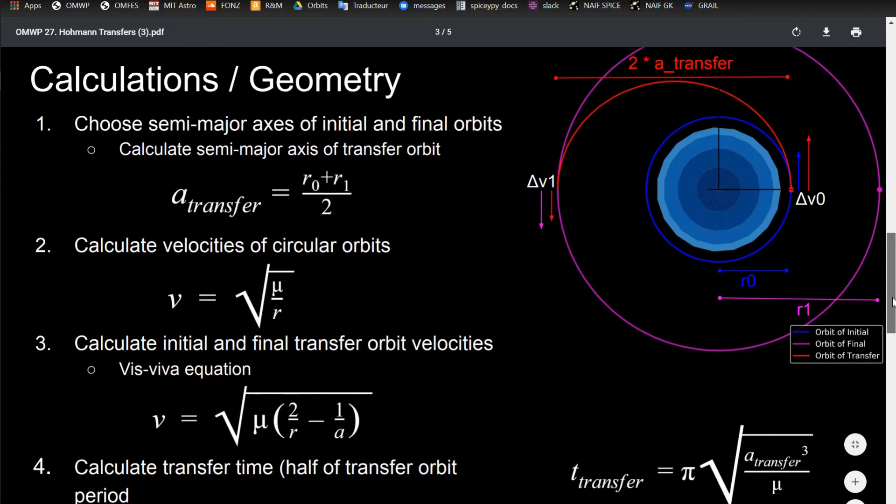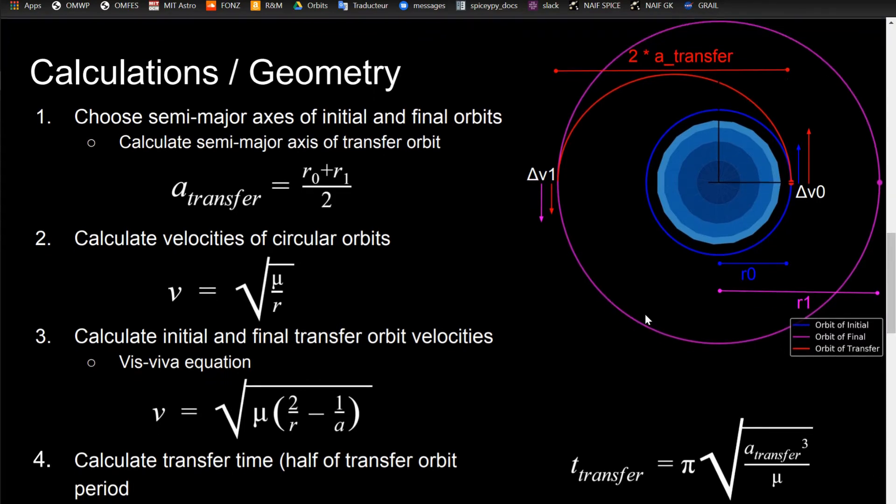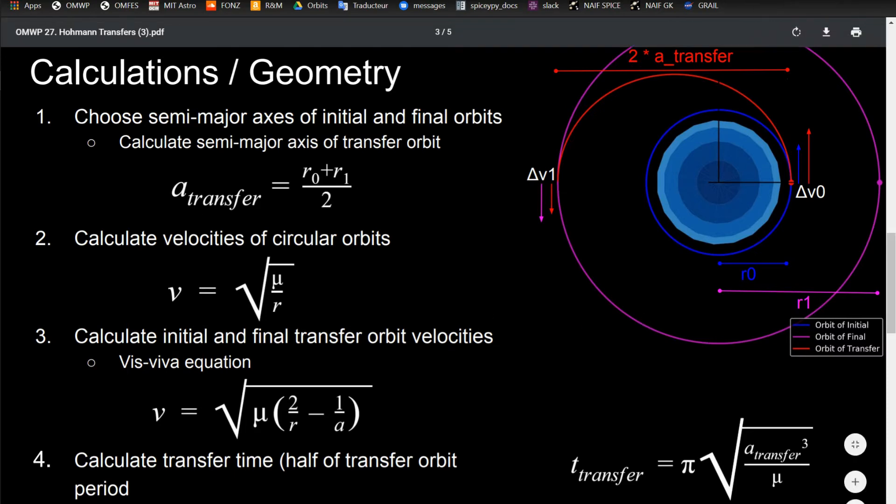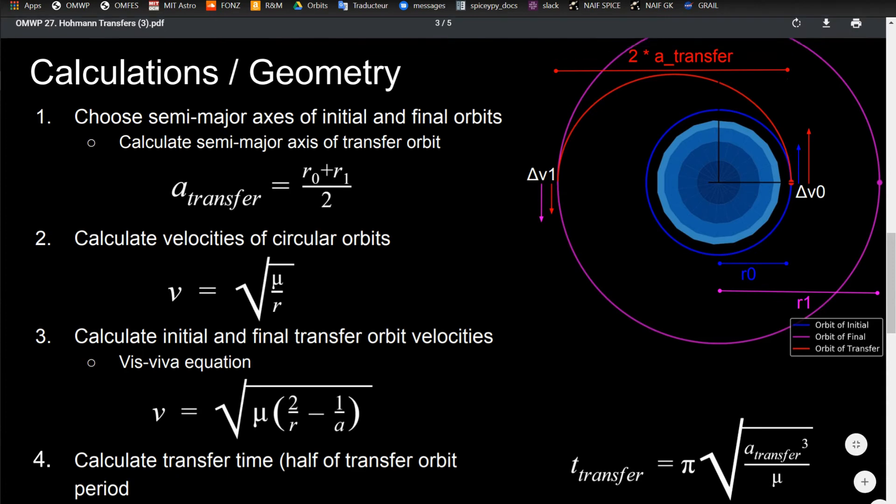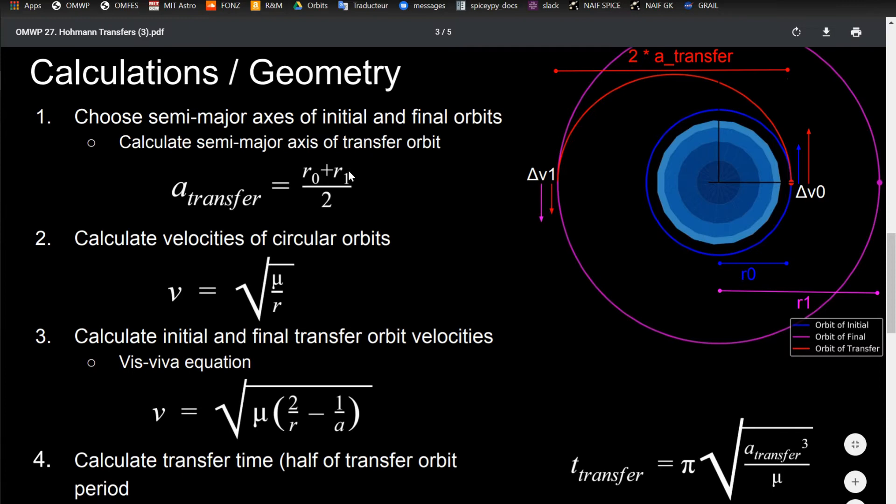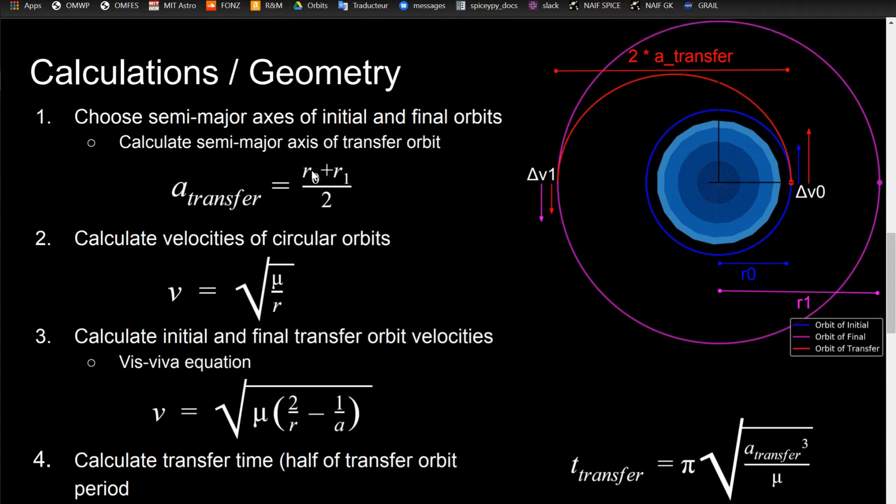The first thing you have to do is choose the semi-major axes for your initial and final orbits. Because these are circular, the semi-major axis is the same as the radial position at any point in the orbit. Once you have those two, you calculate the semi-major axis of the transfer orbit, which is simply the average between the two. I interchange r and a here because they're circular, so they're the same thing. So r0 plus r1 over 2 to get your semi-major axis of your transfer.